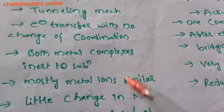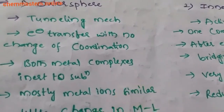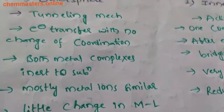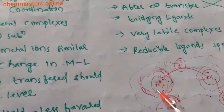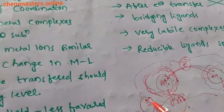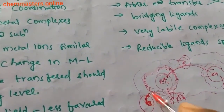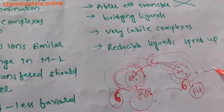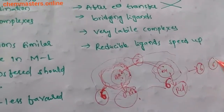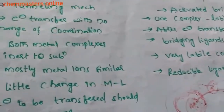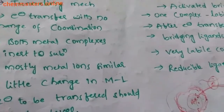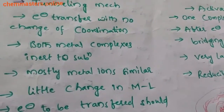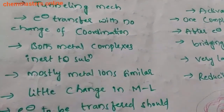In outer sphere electron transfer reactions, there is no change of coordination. That means the coordination number doesn't change. For example, if the initial complex has six coordination and the other also has six coordination, in the product they have the same coordination numbers — there is no change in the coordination sphere after electron transfer.